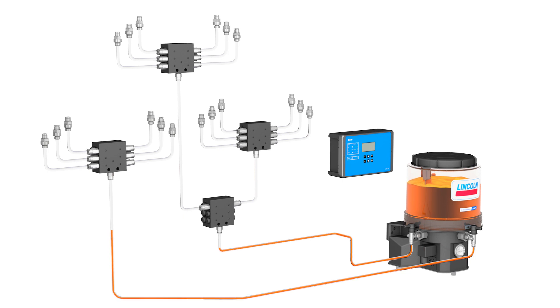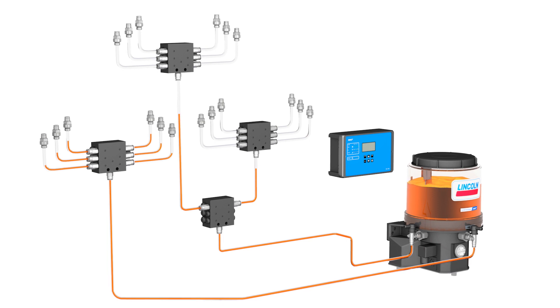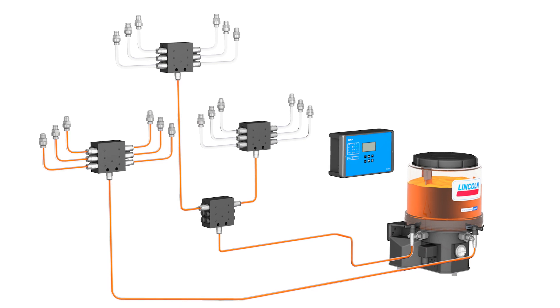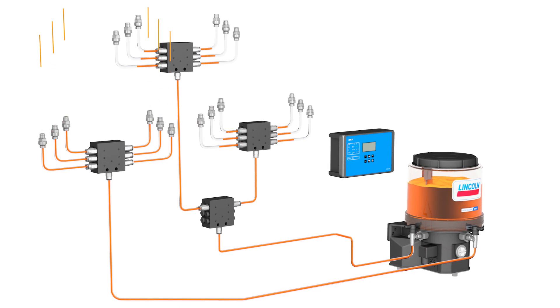At the beginning of the progressive lubrication cycle, a pump provides a preset amount of lubricant into the supply line of the system. The metering devices automatically split the supplied lubricant into even or predefined amounts and meter it directly to the connected lubrication points or to secondary metering devices if utilized.